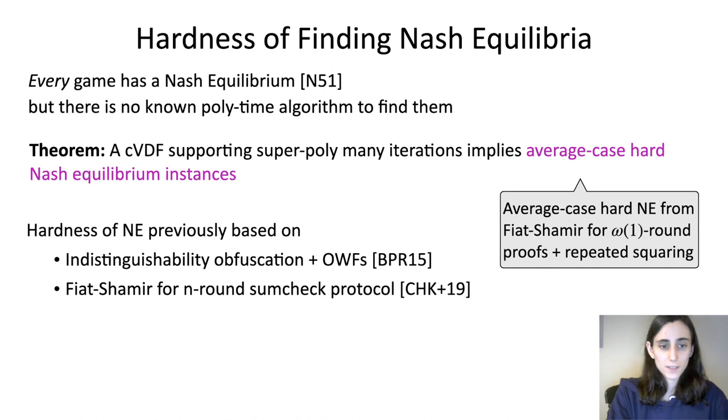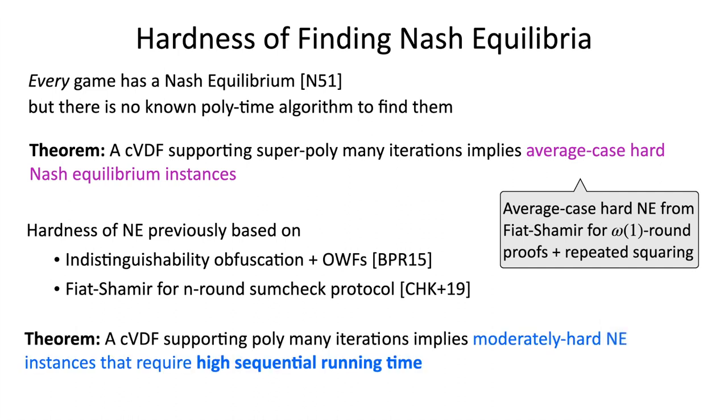Perhaps more surprisingly, we show that the hardness of finding Nash equilibrium requires some sort of sequentiality. In particular, we show that a continuous VDF implies Nash equilibrium instances which can be solved in polynomial time but require a high sequential running time. This is the first kind of evidence for this kind of hardness for Nash equilibrium, and in particular, it's previously unknown under any assumption.